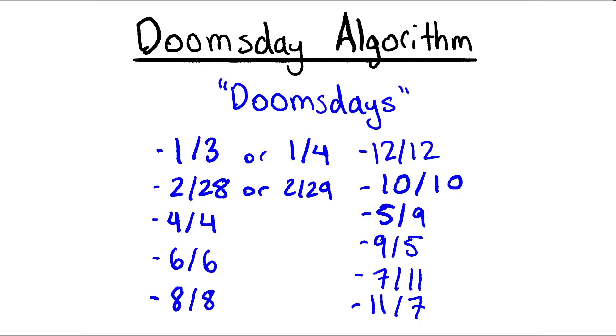But regardless, in any year, these 11 dates will all be the same. And an easy way to remember them are that all the even months, starting from 4, are just the month and the day as the same date. So 4/4, 6/6, 8/8, 10/10, and 12/12.